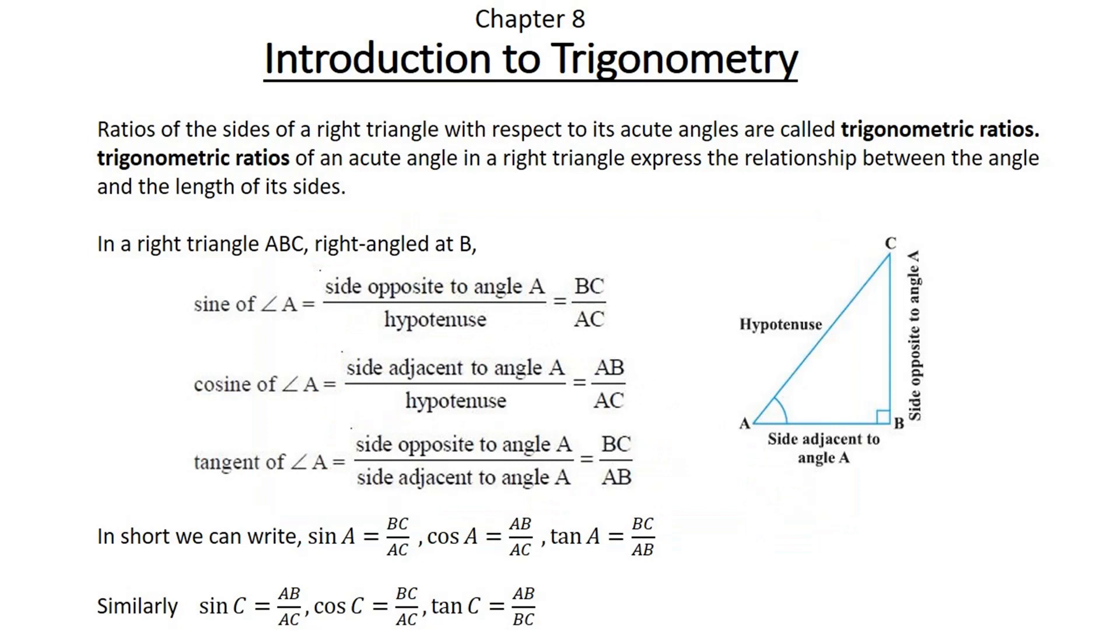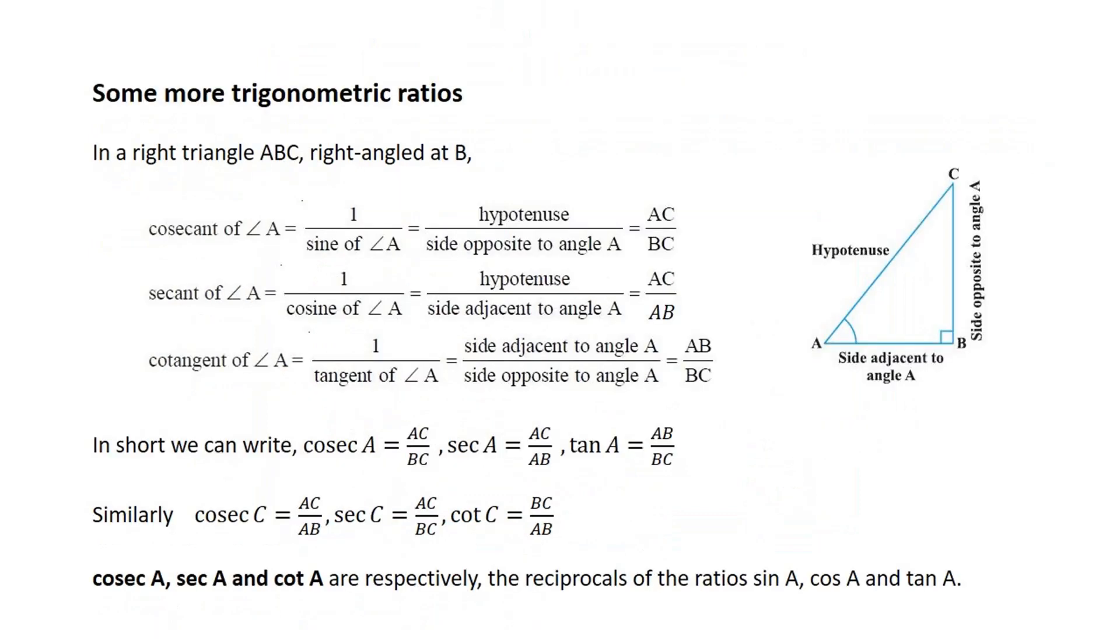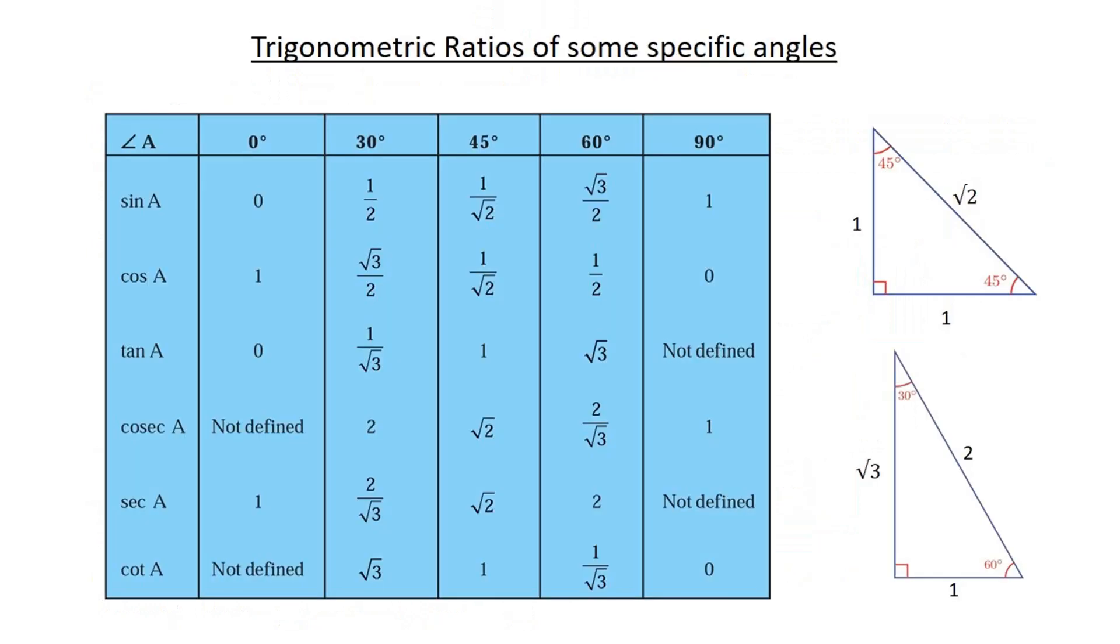The prerequisites for doing such problems are: you should study the previous chapter very well—Introduction to Trigonometry—the trigonometric ratios, the concepts, and the trigonometric values of 30°, 60°, 45°. In this chapter we will restrict questions to 30°, 60°, 45° angles only, but in higher classes you will study problems with other angles also.